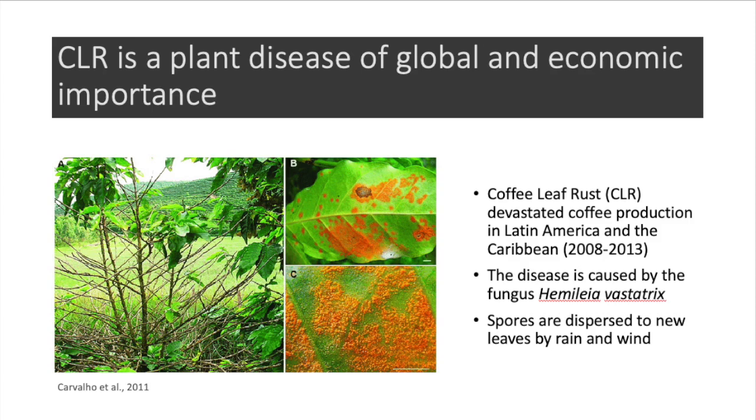The disease is caused by the fungus Hemileia vastatrix, which grows within the leaf's tissue and depletes its resources until it forces the leaf to fall. The spores of this fungus are dispersed mainly through rain and wind to new leaves.